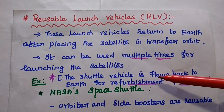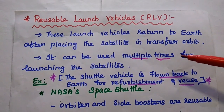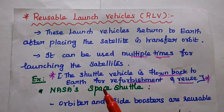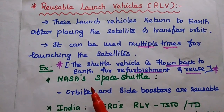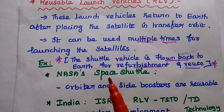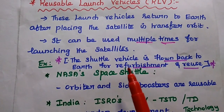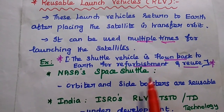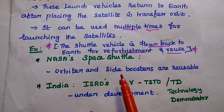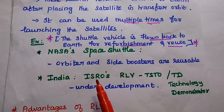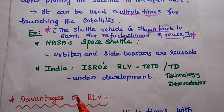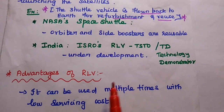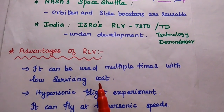The next type is reusable launch vehicle (RLV). These launch vehicles are designed to be used many times. They return to earth after placing the satellite in transfer orbit and can then be used multiple times for launching satellites. The reusable launch vehicle is like a shuttle vehicle which is flown back to earth for refurbishment and reuse. An example is NASA's Space Shuttle, where the orbiter and side boosters are reusable. In India, the ISRO RLV-TD (Technology Demonstrator) is under development.